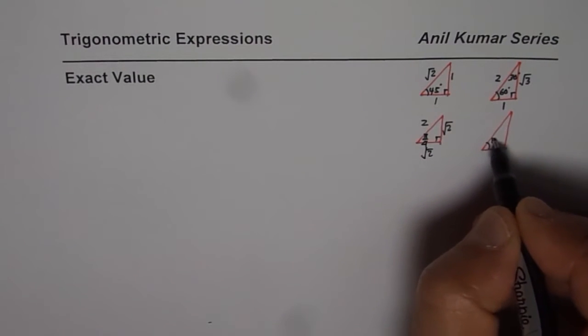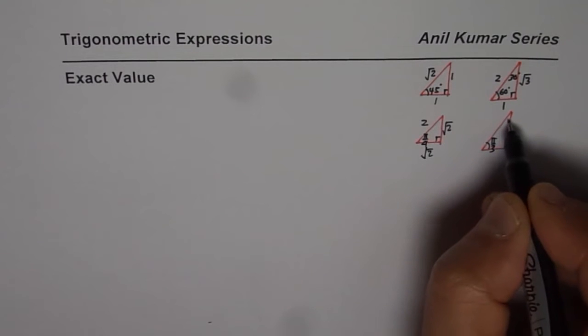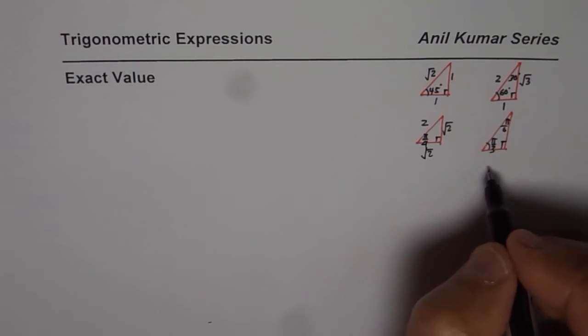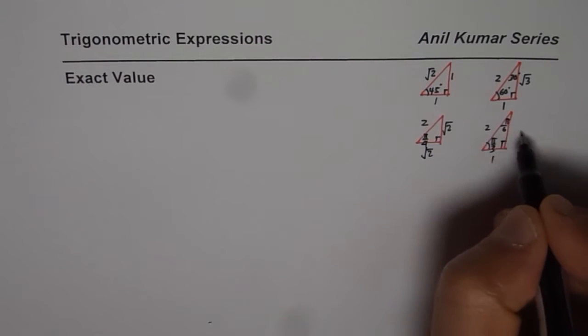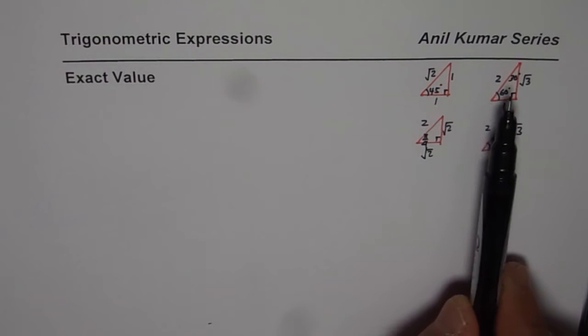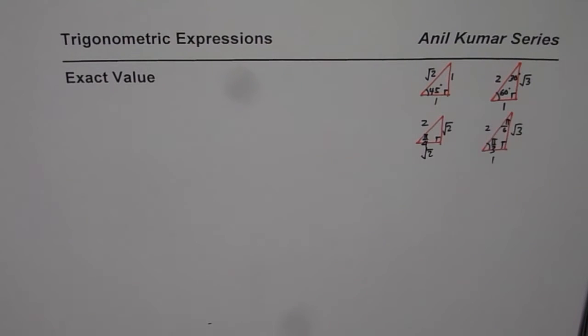And here I will use pi by 3 as 60, pi by 6 as 30 degrees and we will maintain this as 1, 2, square root of 3 for the time being. So when we are talking about exact values these special triangles 45, 45, 90 and 30, 60, 90 are extremely helpful.